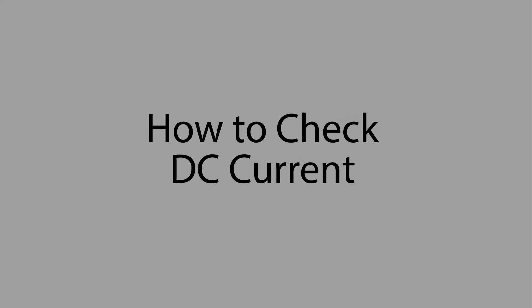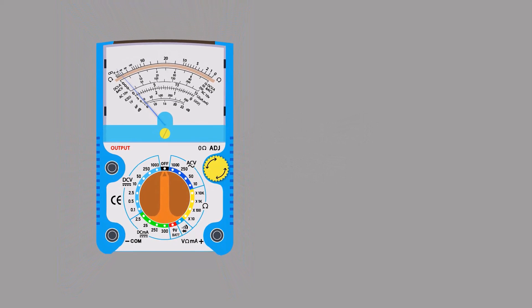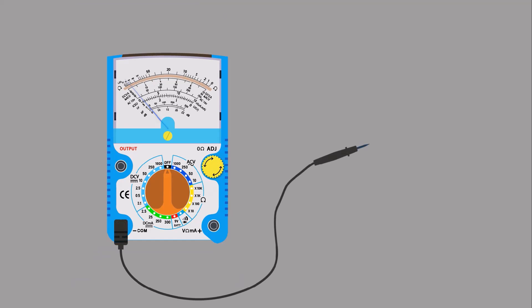How to measure DC current with analog multimeter. Take an analog multimeter. Connect black probe with common port. Connect red probe with positive port.